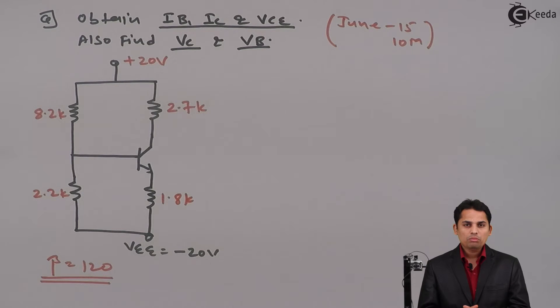Hello students. In the June 15 paper for 10 marks they have asked a problem based upon voltage divider bias circuit. The problem was to find out base current IB, collector current IC and VCE. Along with that they have also asked you to find out collector voltage VC and base voltage VB. Now see the problem first. We will analyze the problem.